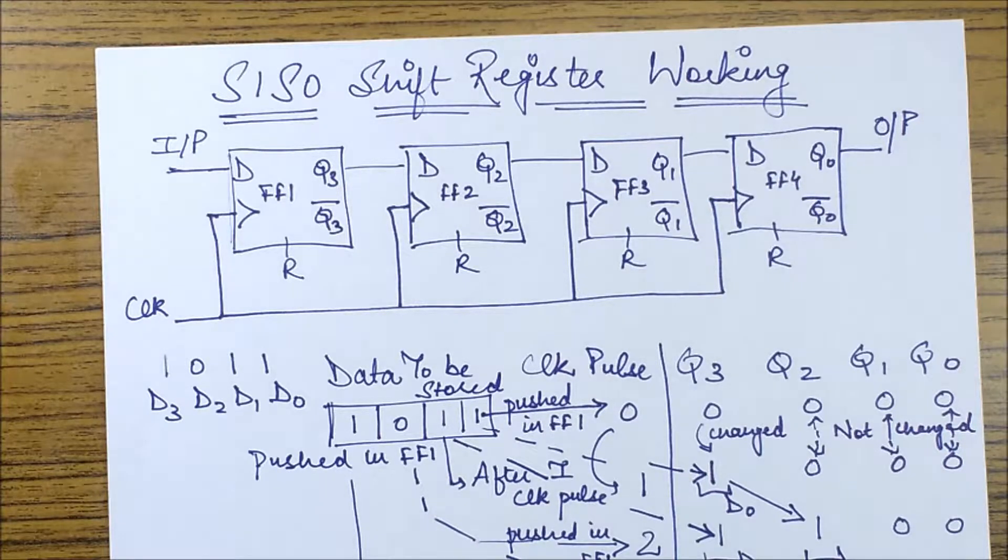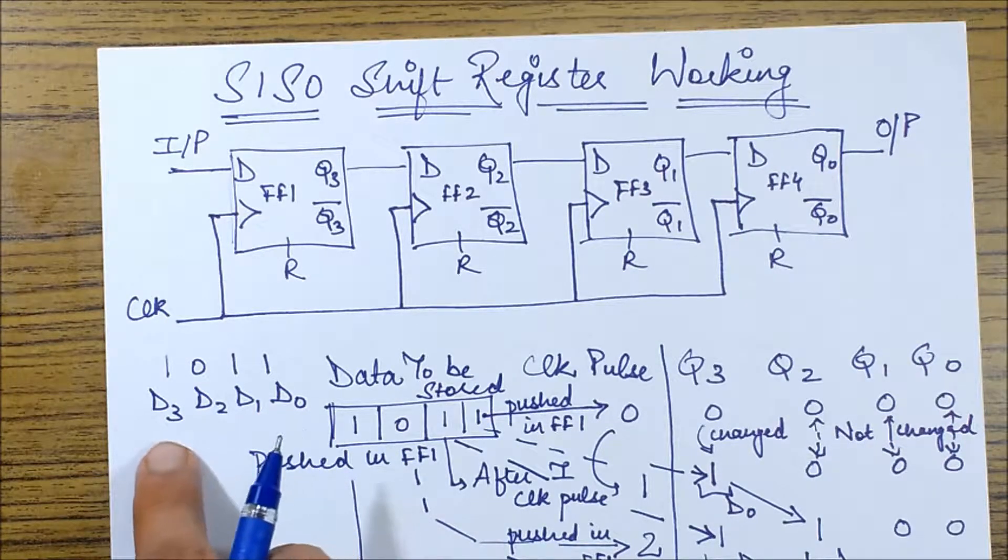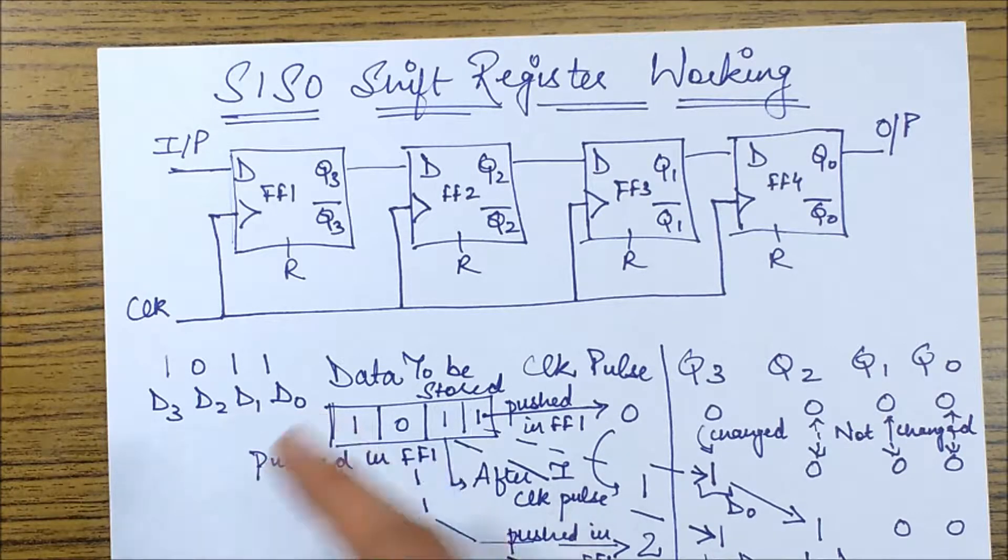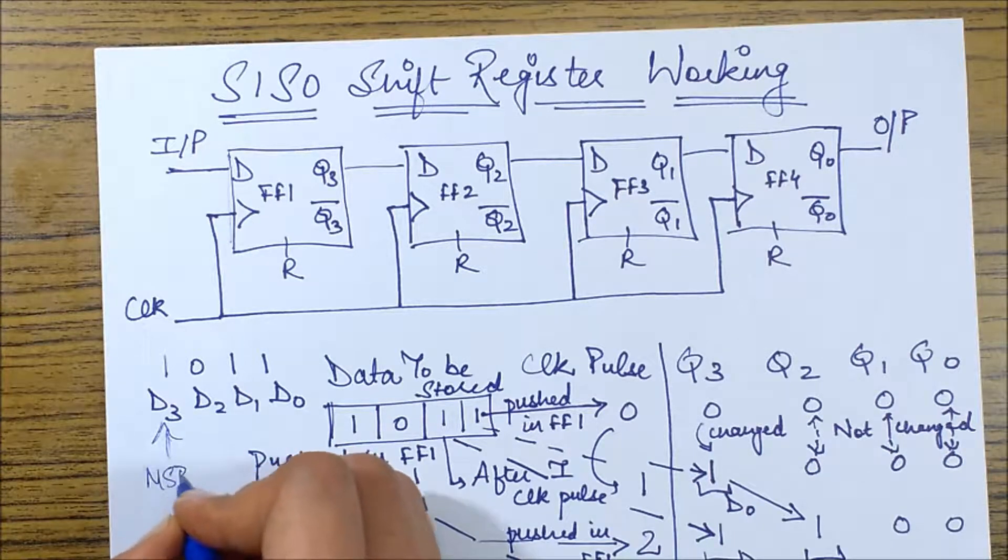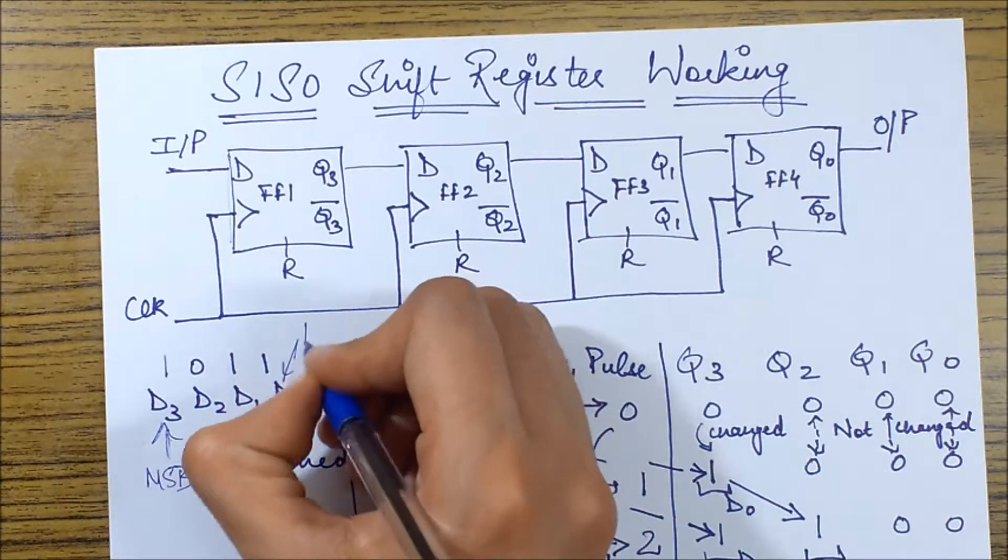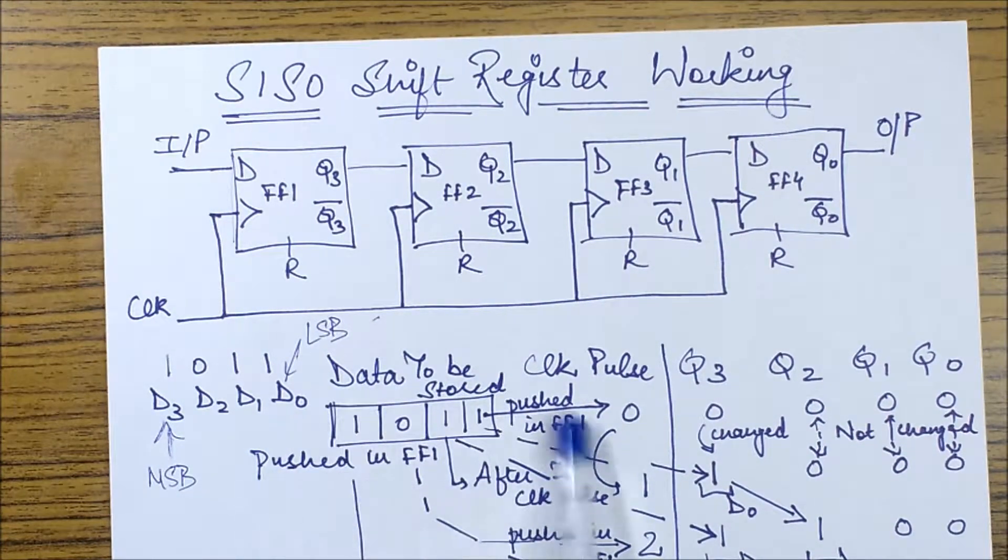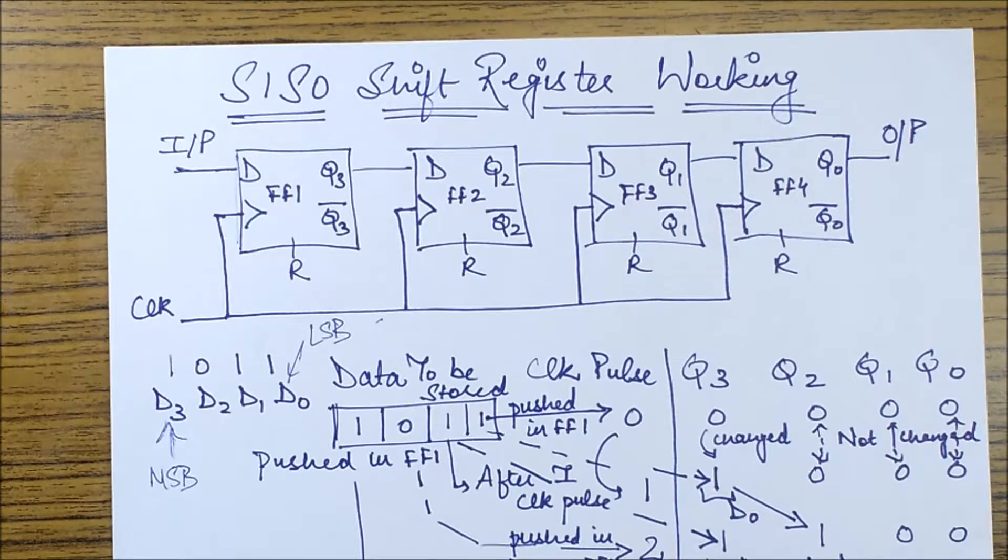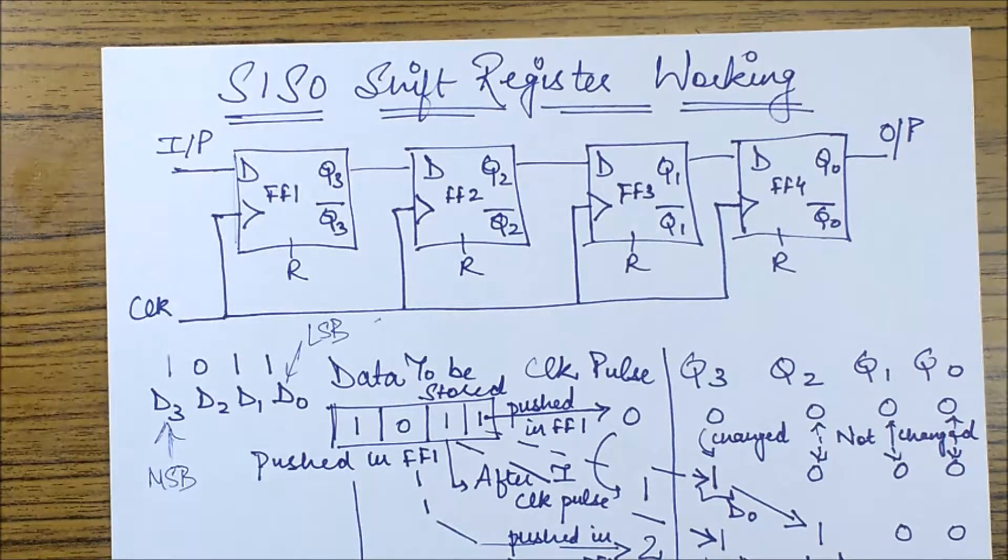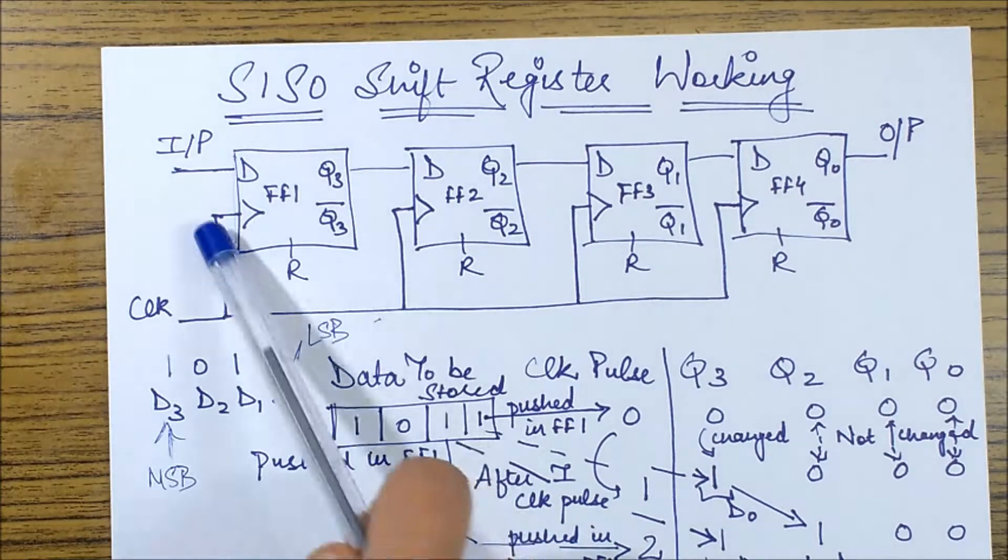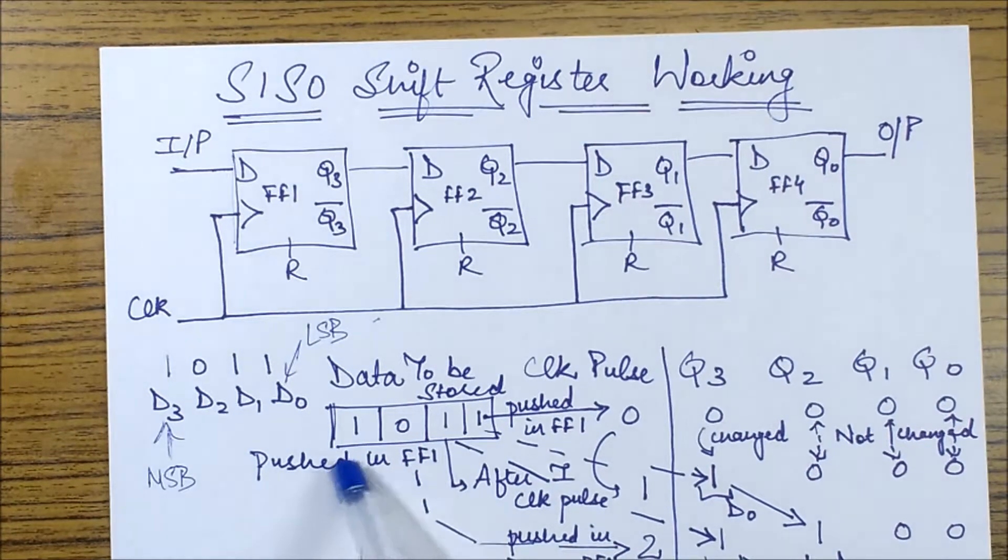Over here we have one data input which is 1011, and I've already labeled these data bits as d3, d2, d1, d0. This means that d3 is the most significant bit and d0 is the least significant bit. The data to be stored is kept in this format, 1011, and I'm going to slowly push these data bits at this input point. Since we have only one input point, I'm going to put them bit by bit.